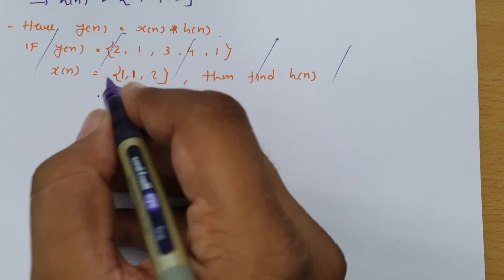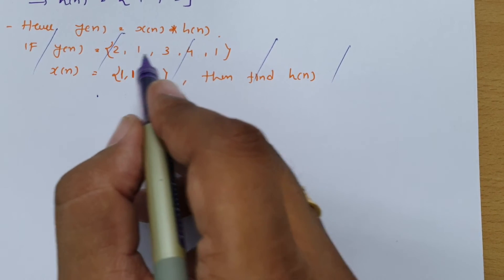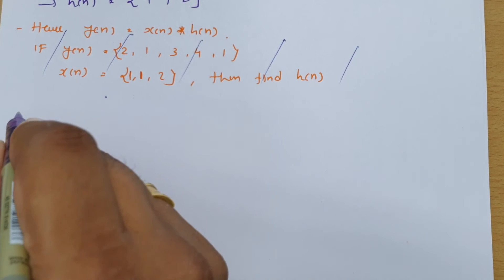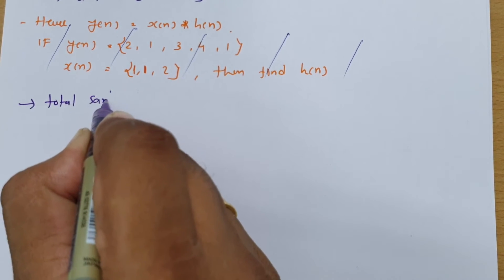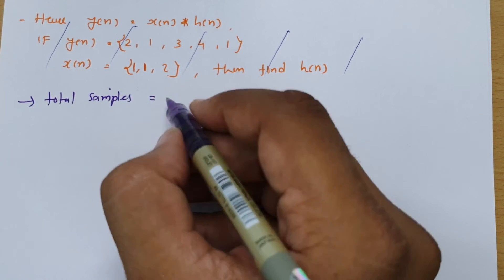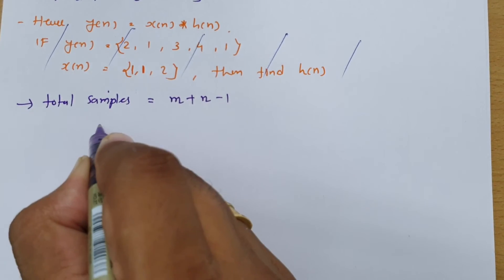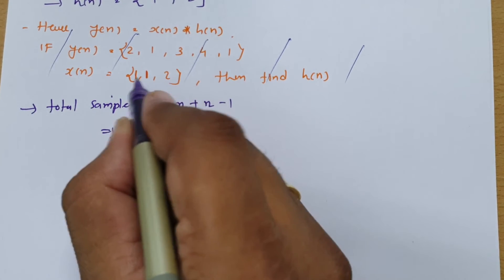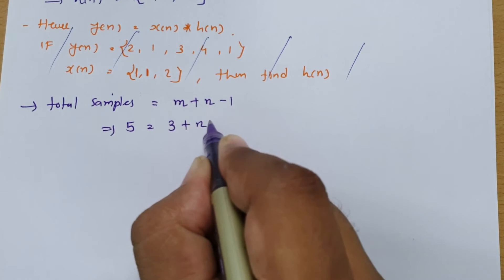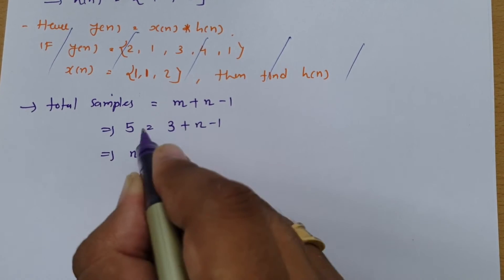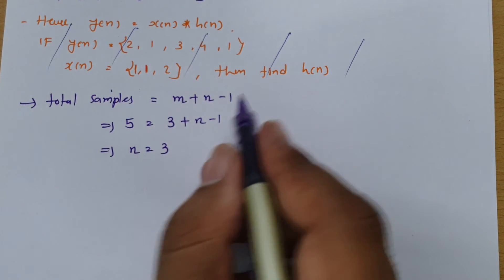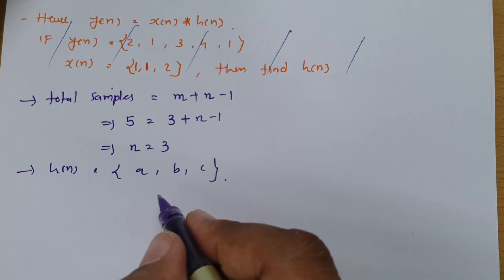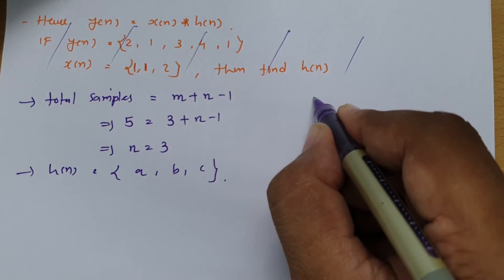In the second problem, y of n equals the convolution of x of n and h of n, where y of n is given as {2, 1, 3, 4, 1} and x of n is {1, 1, 2}. The task is to find h of n. Total samples equals m plus n minus 1. y of n has 5 samples and x of n has 3 samples, so n equals 3 — there are 3 samples in h of n. So we assume h of n equals {a, b, c}.